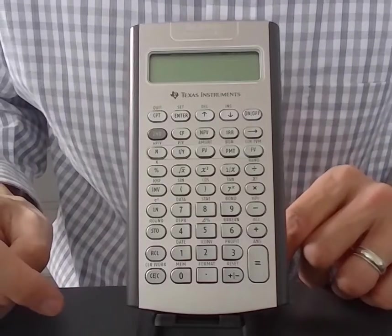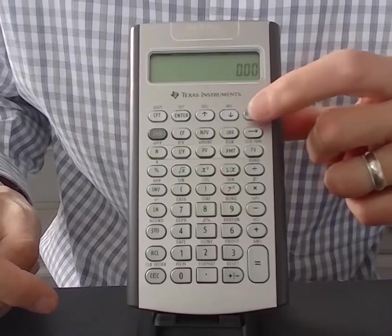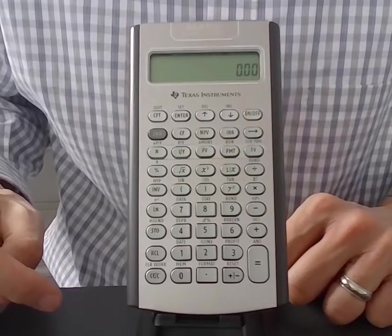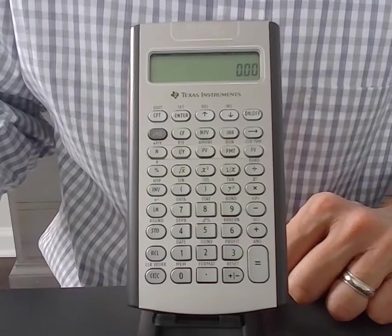To begin using the Texas Instruments BA2 Plus Financial Calculator, we turn it on and we see that this calculator currently is only showing two digits past the decimal point.